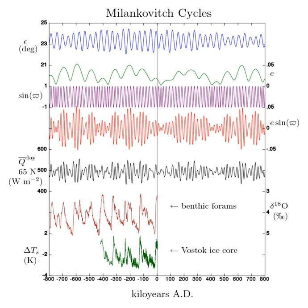The Earth's rotation around its axis and revolution around the Sun evolve over time due to gravitational interactions with other bodies in the Solar System. The variations are complex, but a few cycles are dominant. The Earth's orbit varies between nearly circular and mildly elliptical. When the orbit is more elongated, there is more variation in the distance between the Earth and the Sun, and in the amount of solar radiation at different times in the year.